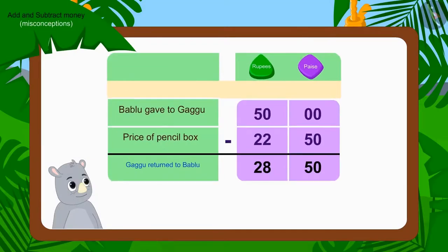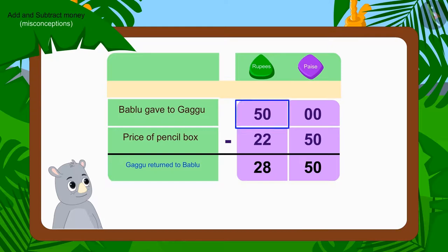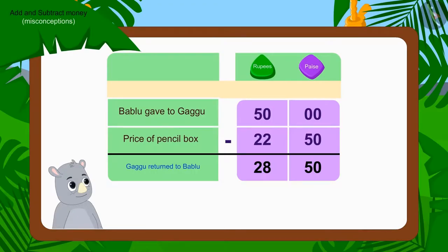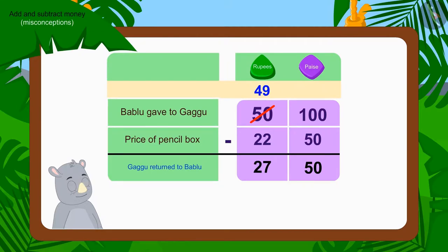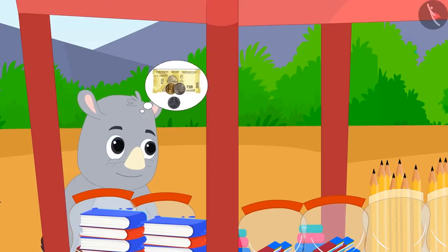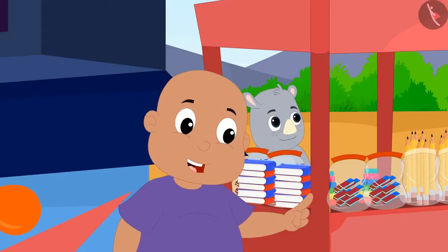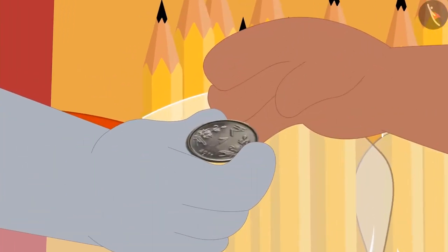Children, if we look at the subtraction done by Gaggu, we will find that Gaggu also used the borrowing process like us. But he forgot to cut 50 rupees and write 49 rupees. Therefore, the amount returned by Gaggu to Bablu was wrong. Children, can you find the right amount by subtracting the numbers written in rupees? Well done children, you have written the correct answer. Gaggu was to return 27 rupees 50 paise to Bablu. Bablu quickly did the math and found that Gaggu gave him 1 rupee more, and he promptly returned 1 rupee to Gaggu.